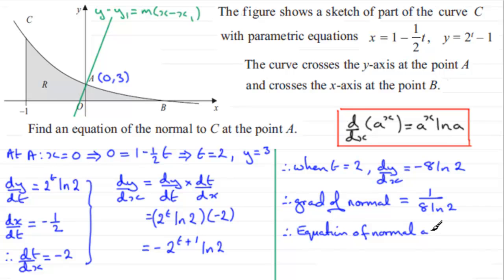Equation of normal at A is, using this format here, it's going to be y minus y1, y1 is 3, equals the gradient which is 1 over 8 multiplied by the natural log of 2, and then that is multiplied by x minus x1. Well, x1 is 0, so we just got to multiply it by x. So there's your equation. You can leave it like that. It said find an equation of the normal to C at the point A. You could I suppose add 3 to both sides and get y equals 1 over 8 natural log 2 multiplied by x plus 3.